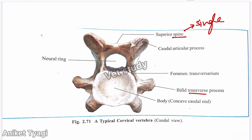The transverse process is divided into two parts: an upper tubercular part and a lower plate-like part. The upper tubercular part is extended at a right angle, and the lower plate-like part is extended downward, forward, and outward, as seen on the actual bone.